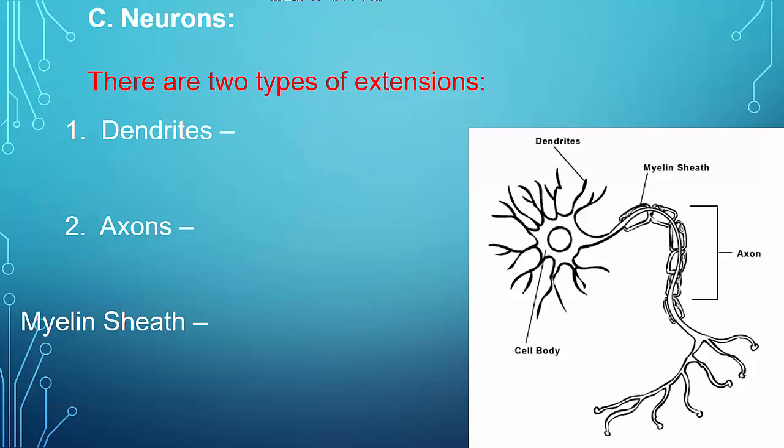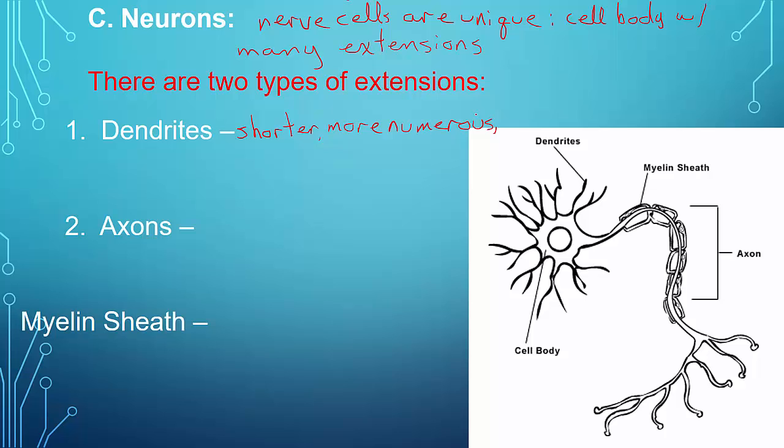They are uniquely structured. There are two types of extensions to a nerve cell or to a neuron. One is called the dendrite or dendrites. These are shorter, more numerous. They along with the cell body form the receptive ends of neurons. This is where the cell receives signals.